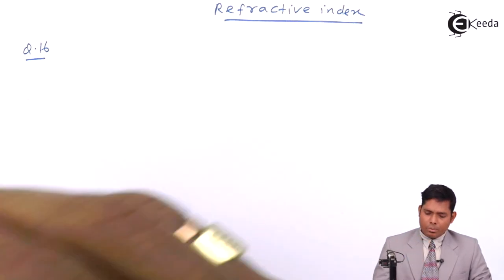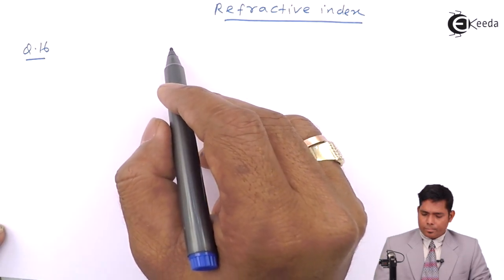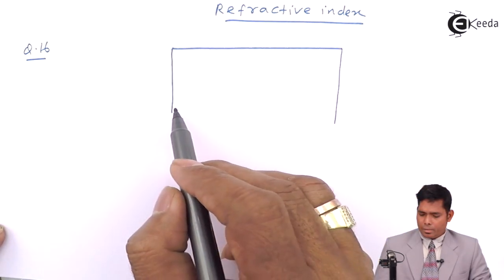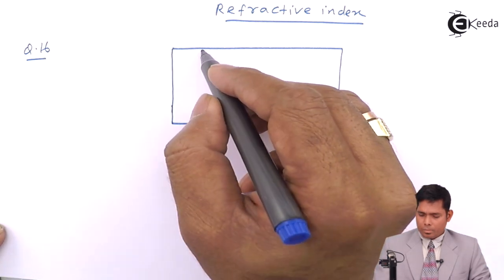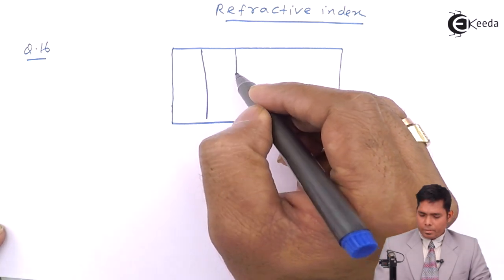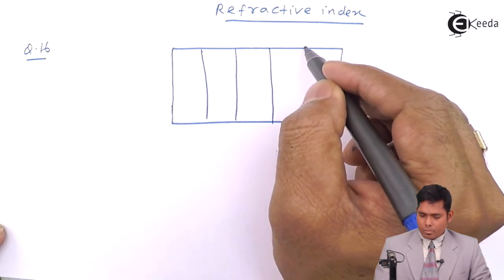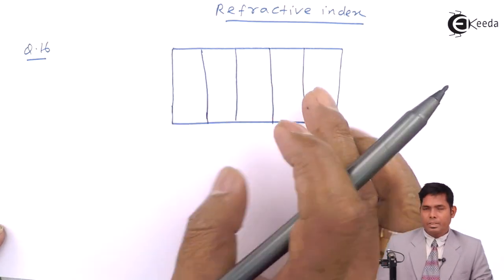The question says that if you have a parallel medium and front medium but they are parallel to each other.